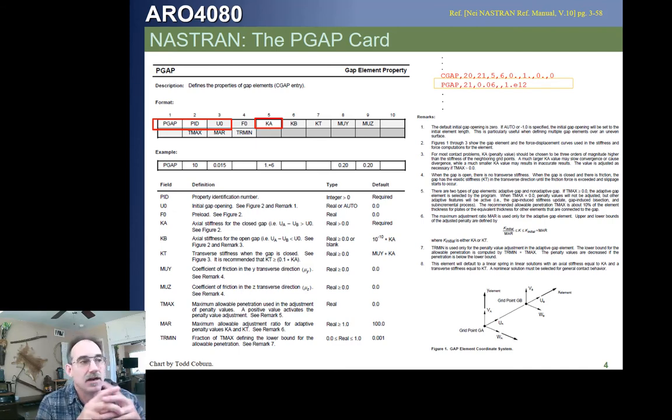Not too huge to cause singularity problems, but big enough to be much stiffer than any other structural elements. In field six, we're allowed, where we are allowed to place an initial stiffness before the gap closes.